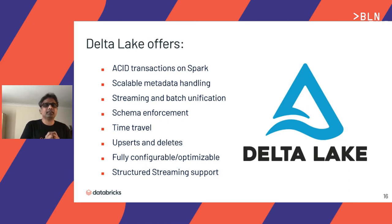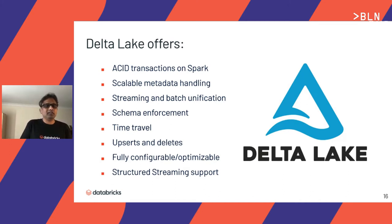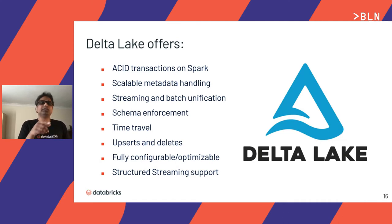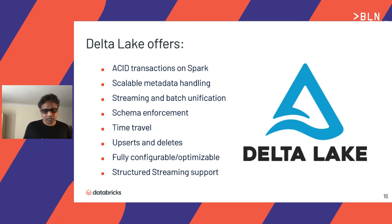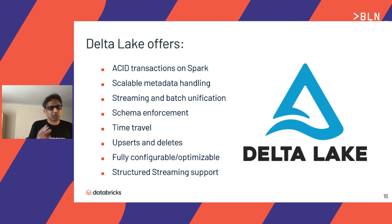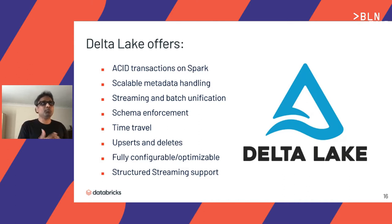Delta Lake offers ACID transactions on Spark — whatever you write to a Delta table will not be read by another pipeline writing at the same time, ensuring transaction isolation. It unifies streaming and batch on the same table, resolving Lambda architecture concerns. It provides schema enforcement with optional schema evolution, time travel to go back and audit who processed data on which cluster and date, and upserts and deletes as major features.